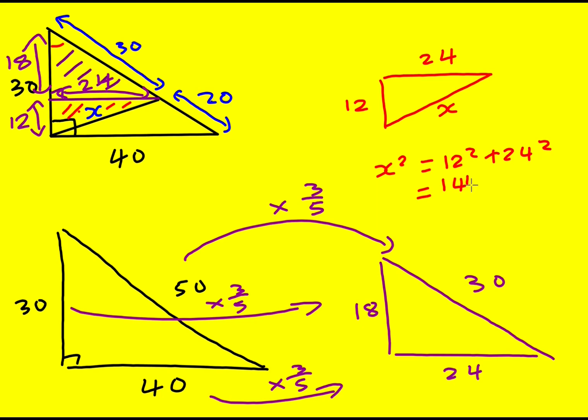This is 144 plus. Now a nice way to do 24 squared actually is to realize that it's 2 times 12 all squared. So it's going to be 4 times 12 squared. So I just need to double 144 to 288 and then double it again.